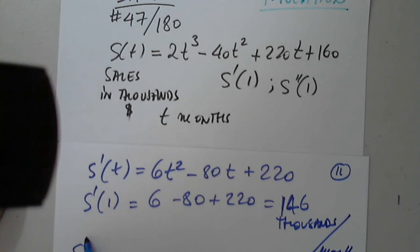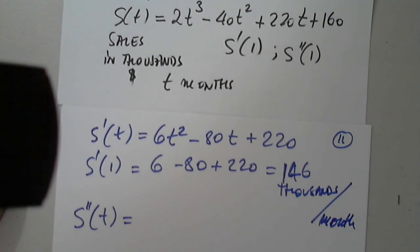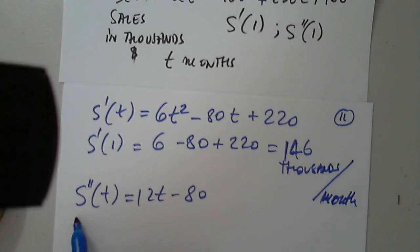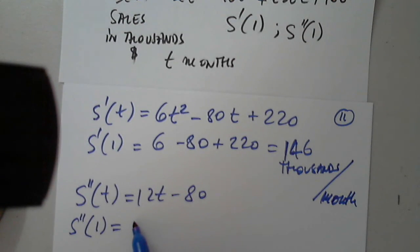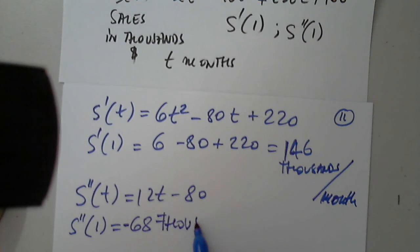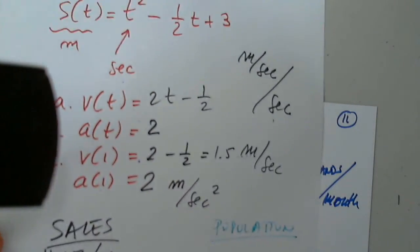Can anyone help with the second derivative of t? It's 12t minus 80 — very good. Now s double prime of 1 is 12 minus 80, which is negative 68. Good — and the measurement unit? It is thousands of dollars per month squared — exactly.